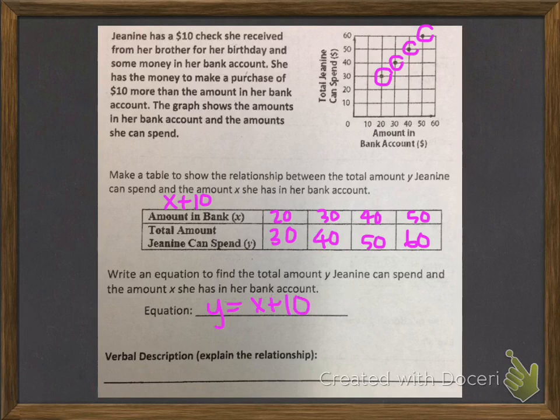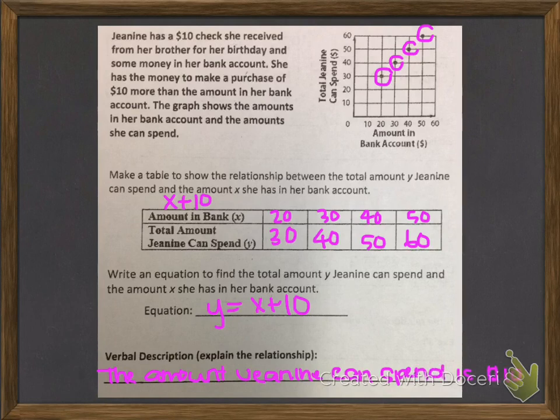So this is an additive relationship. And when it says we need a verbal description to explain the relationship, we're going to explain specifically what that means for this problem. So what we're going to say is the amount Janine can spend is $10 more than the amount in her account.